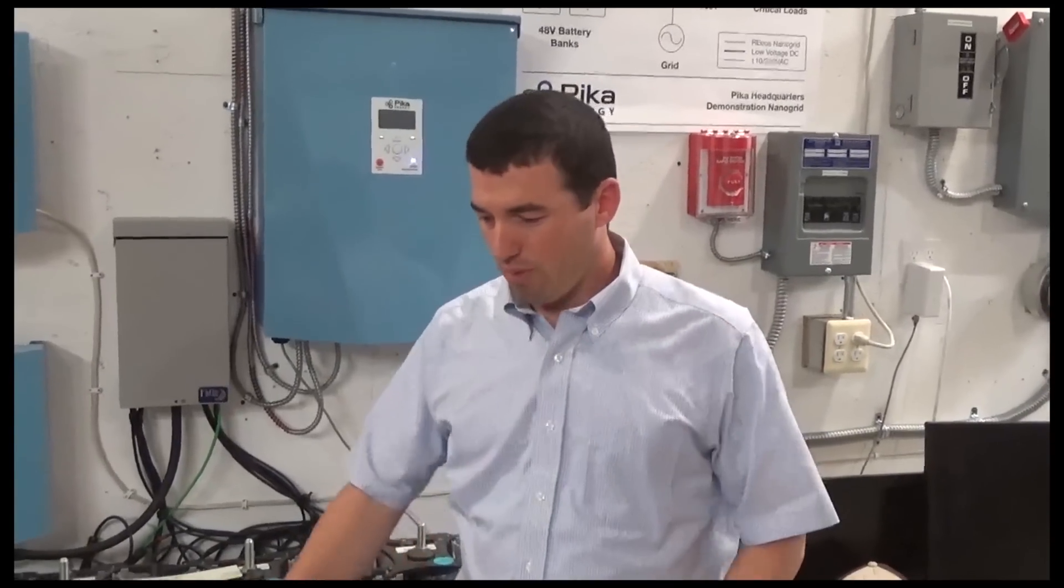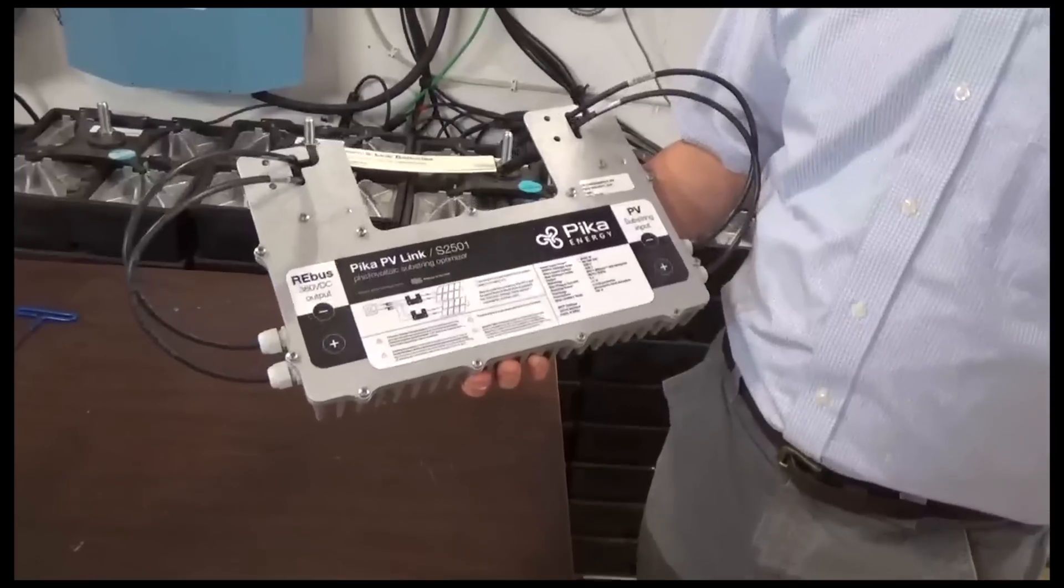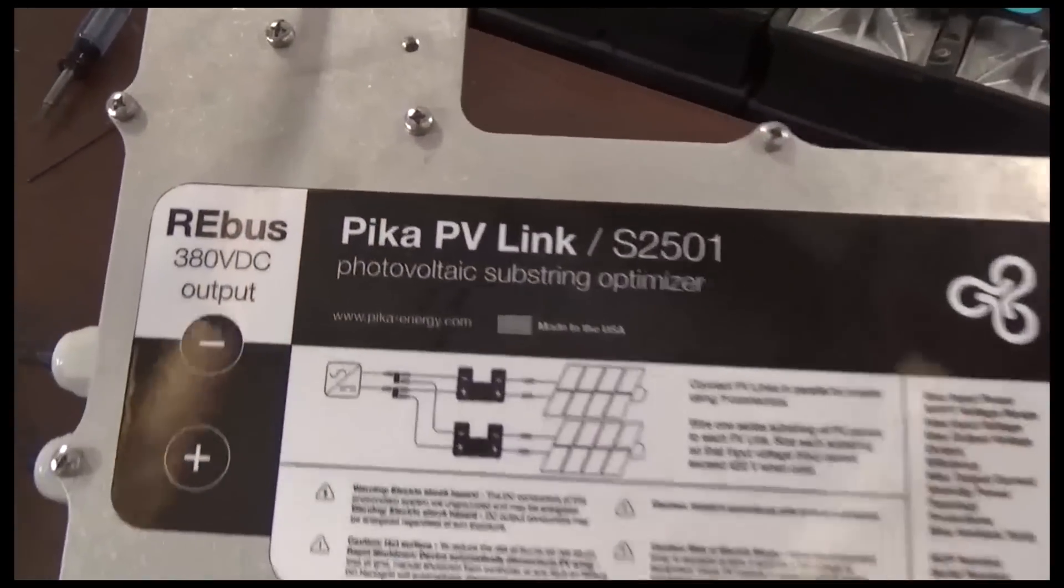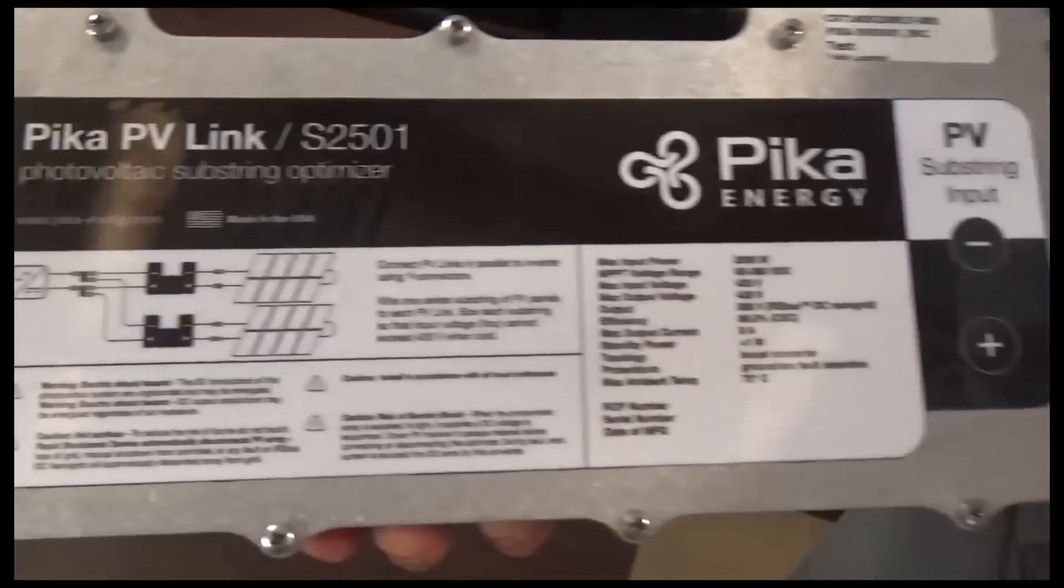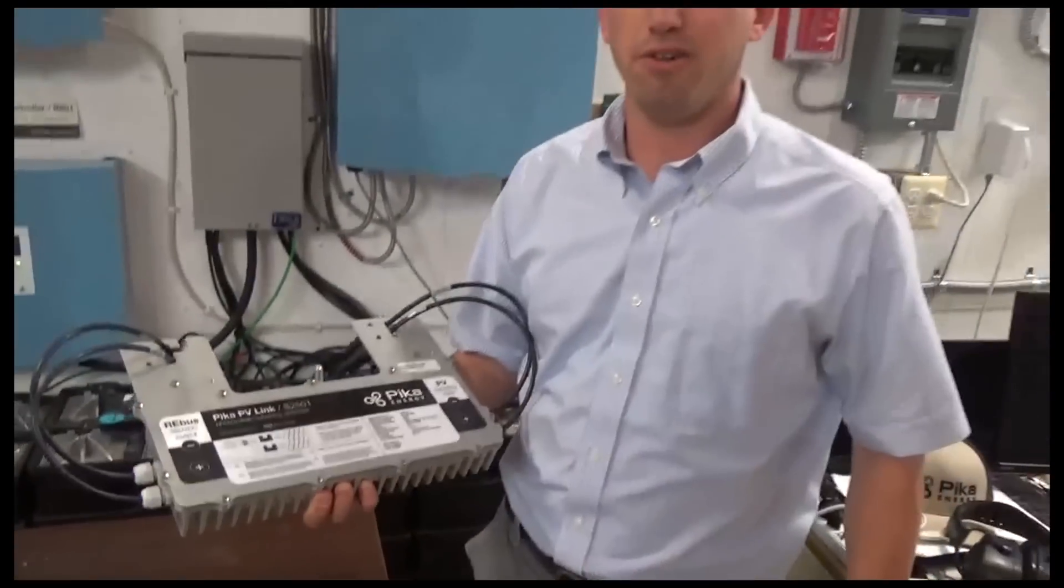We build what we call a PV link. So this is a product that can handle up to 8 or 9 modules depending on the module. It's got a maximum power point tracking tracker in it, it's got rapid shutdown, it's easy to install because you only need to do one for every eight modules.